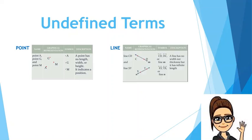A line is a straight arrangement of points. It can be named in two ways: using two points that lie on the line, or a lowercase letter found near the arrowhead. Looking at the graphical representation, you can name it using two points — CD or DC — with a line symbol with arrowheads on both ends above the two letters. Or you can write the word 'line' followed by the small letter m — line m.